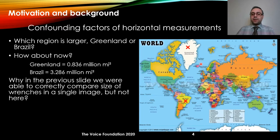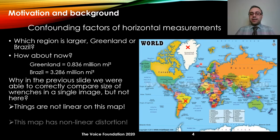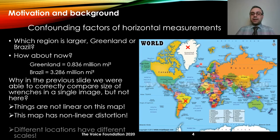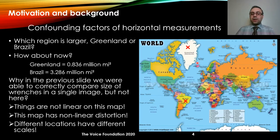So why is this happening? Why, in the previous example with objects in a single image, we were able to compare their size, but not here? The short answer is that this image has a non-linear distortion. Basically, the regions around the center of the image, around the equator, appear smaller, and the regions toward both poles appear larger.